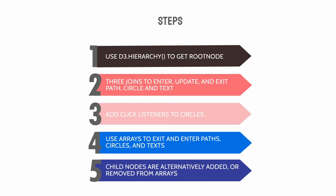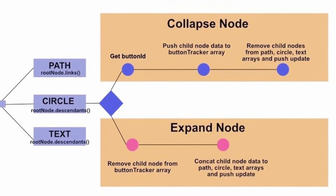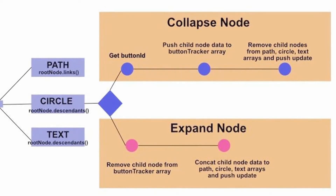Each time a circle is clicked it'll either collapse or expand. We need to track which circle has been clicked - when it collapses we grab hold of all the child nodes including text elements, paths, and circles, and save them in a separate array. The next time that circle is clicked, we use the circle ID to look up which child nodes were previously removed, add those back to the array, and pass it back to the join function.